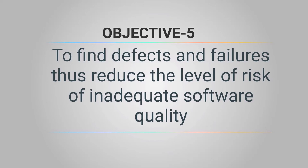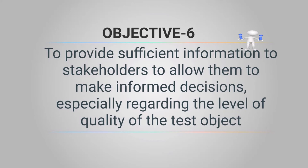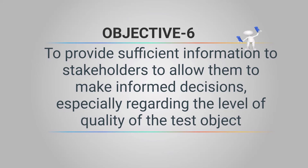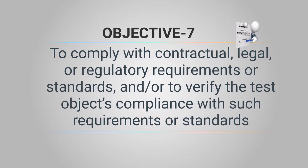The sixth objective is to provide sufficient information to stakeholders to allow them to make informed decisions, especially regarding the level of quality of the test object. When we find defects, we don't need to fix all of them before release. Instead, we provide sufficient information to the stakeholders regarding defects and the risk associated with them, which will help stakeholders to prioritize future activities.